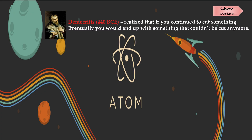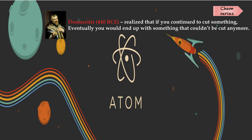In 440 BCE, Democritus realized that if you continue to cut something, eventually you would end up with something that couldn't be cut anymore — that is the atom. The word atom comes from the Latin word 'atomus,' meaning 'not cut.'